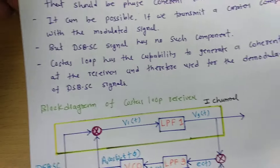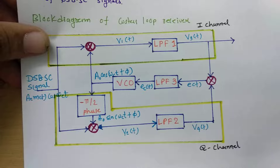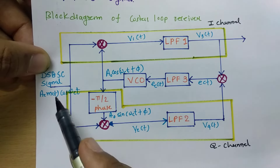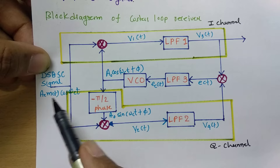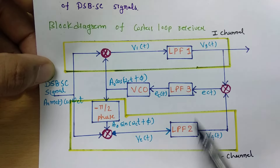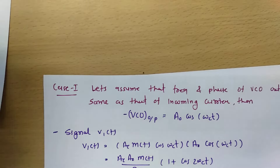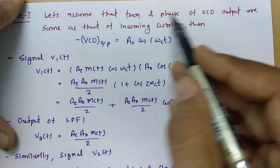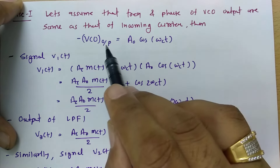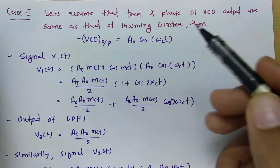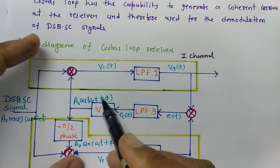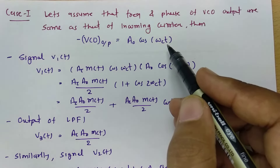Let us observe the system step by step. V1(t) is the multiplication of the DSBSC signal and A₀·cos(ωc·t + φ), and V2(t) is the multiplication of the DSBSC signal AC·m(t)·cos(ωc·t) and A₀·sin(ωc·t + φ). In Case 1, let us assume the frequency and phase of the VCO output are the same as that of the incoming carrier. In this case φ = 0, so the VCO output is A₀·cos(ωc·t).